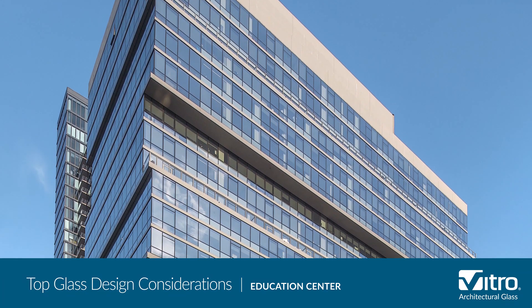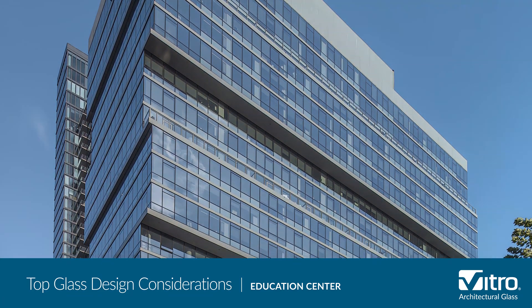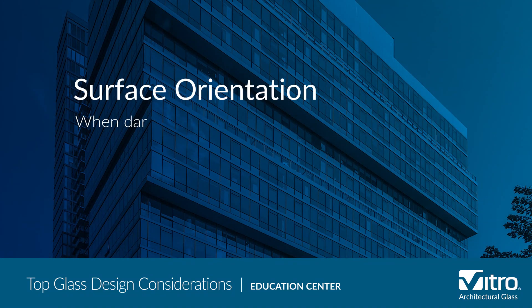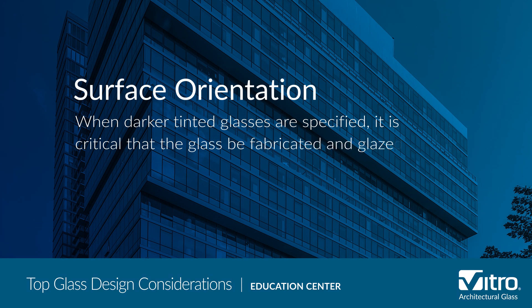Next is surface orientation. As flat glass is produced in the float glass process, it ends up with a tin side that contacted the liquid tin and an air side. When darker tinted glass such as gray light tube glass is specified, it is critical that the glass be fabricated and glazed with a consistent surface orientation in order to achieve a consistent appearance.